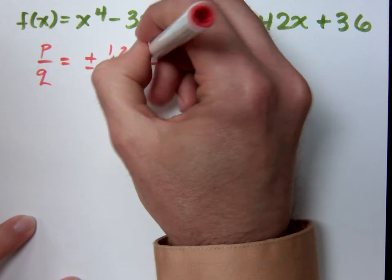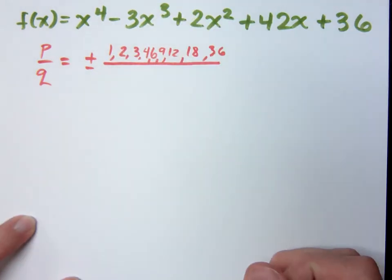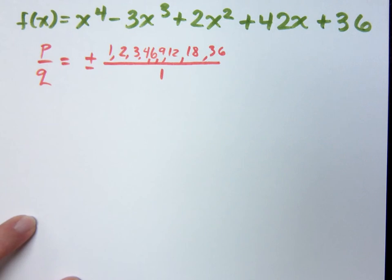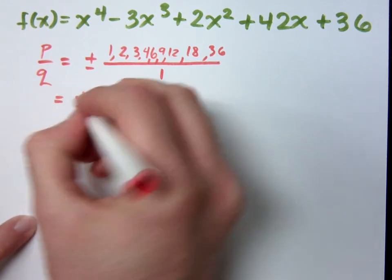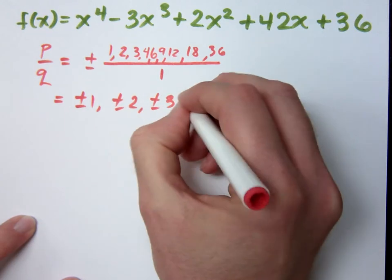Whoops. I'm running out of room here. I've got a lot. What are the factors of q? Oh, that sounds so bad. So that means your possible rational zeros are these guys right here.